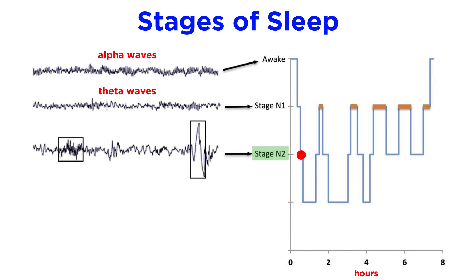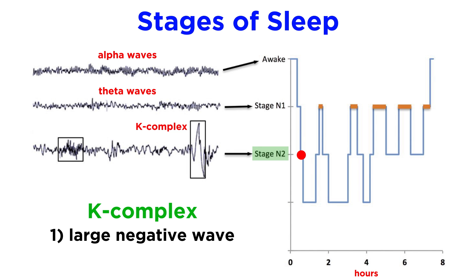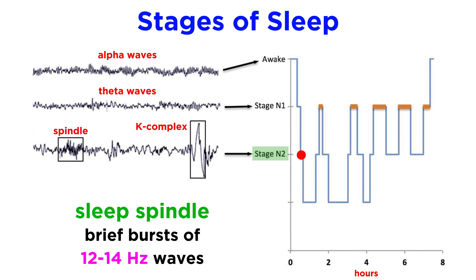Looking at stage two, or N2, there are two important features to the EEG. We can see K complexes, which always involve a large negative wave followed by a large positive wave. We can also see sleep spindles, which are brief bursts of 12 to 14 hertz waves.